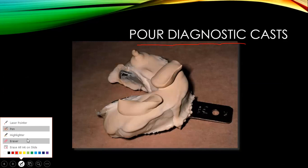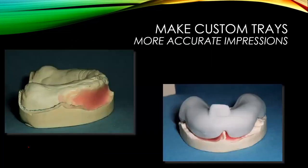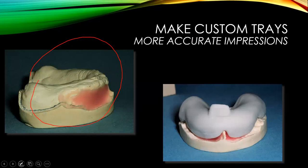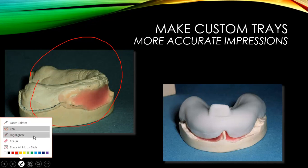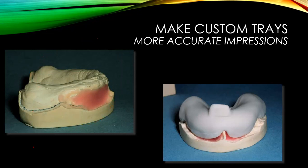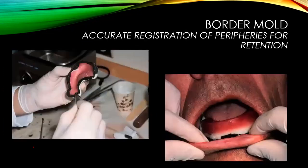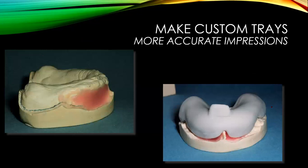After the diagnostic cast is poured and taken out from the impression tray, you need to make a custom tray from it. The more accurate the impression, the more accurate the custom tray will be. Using the study cast, you make your custom tray with the help of acrylic.